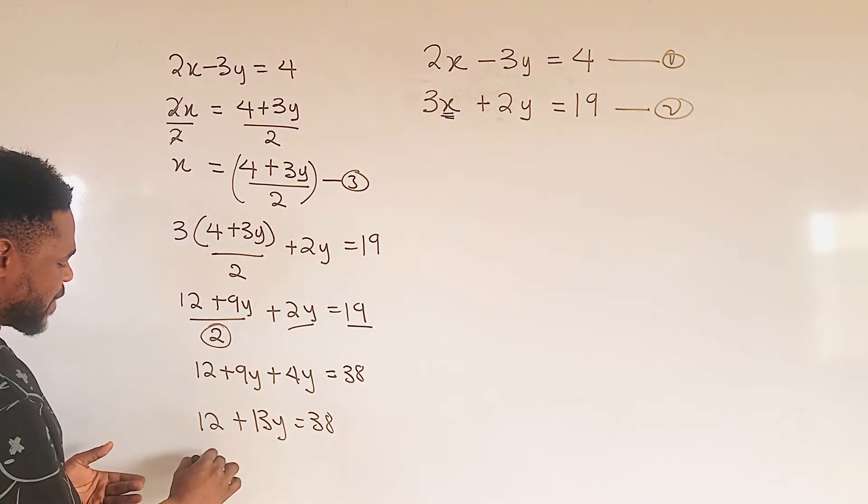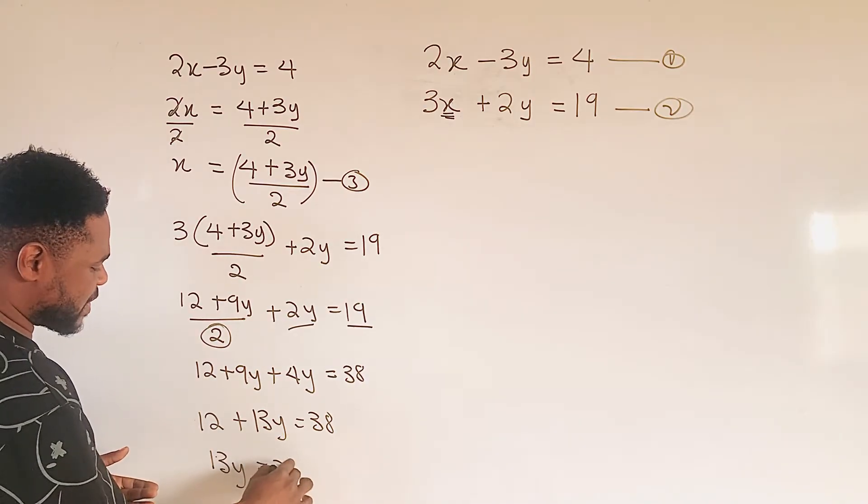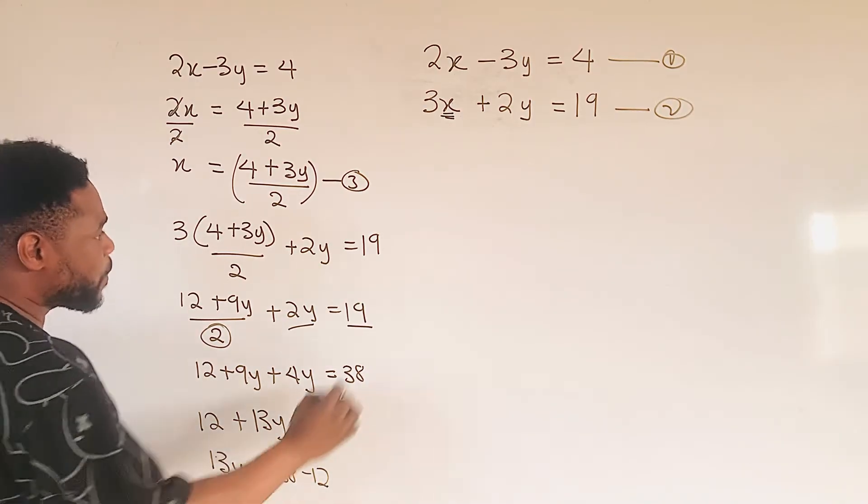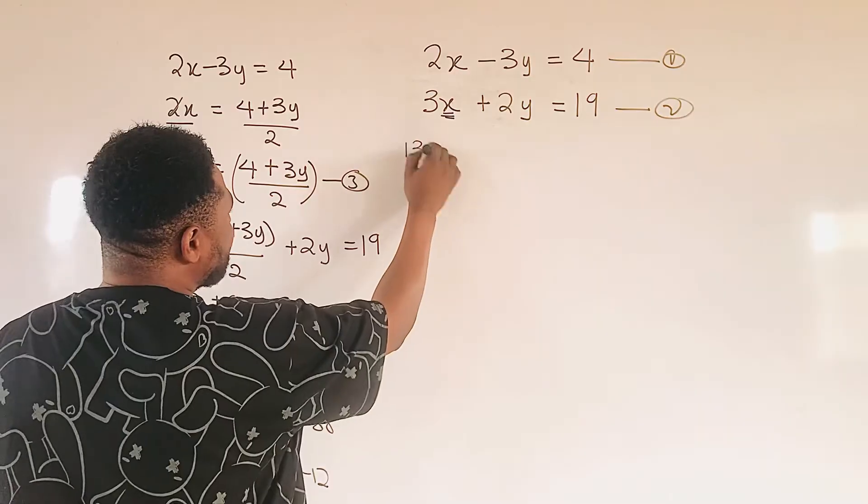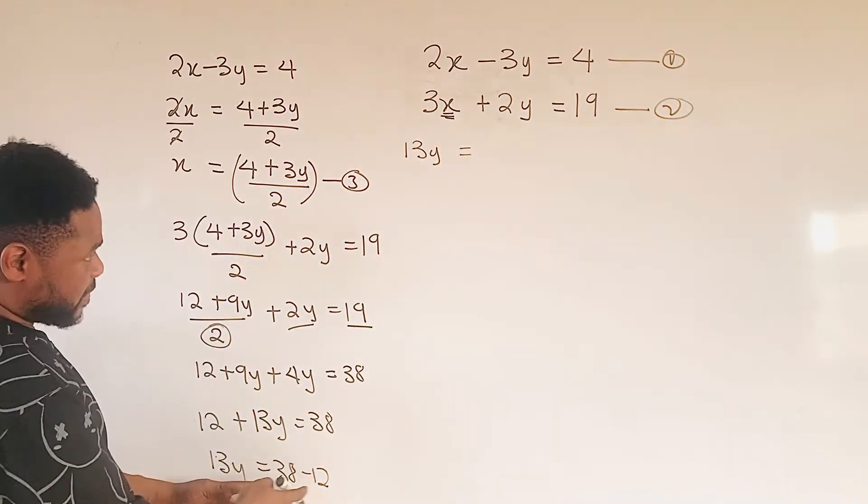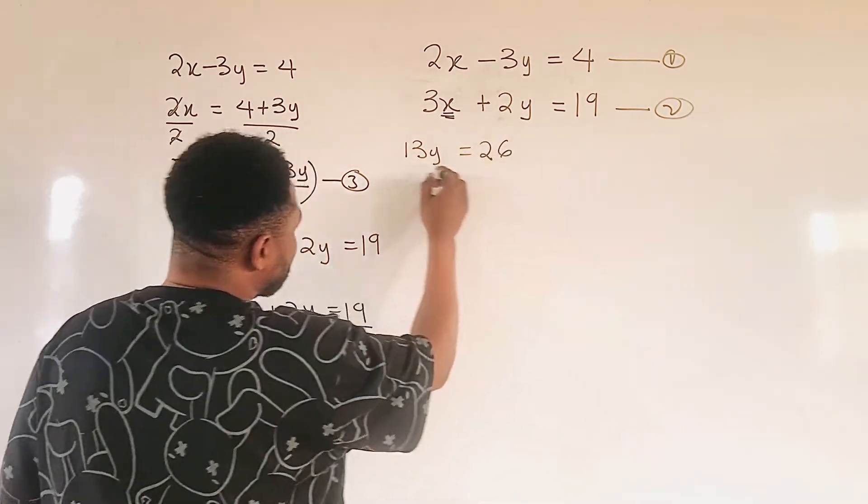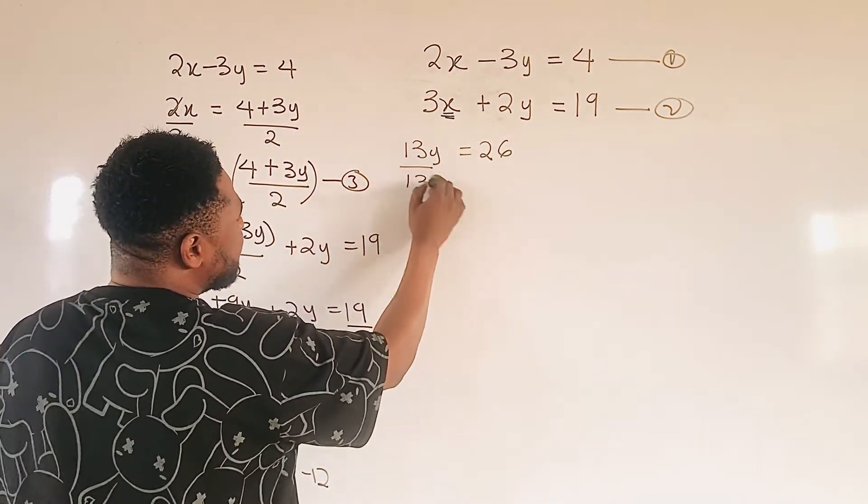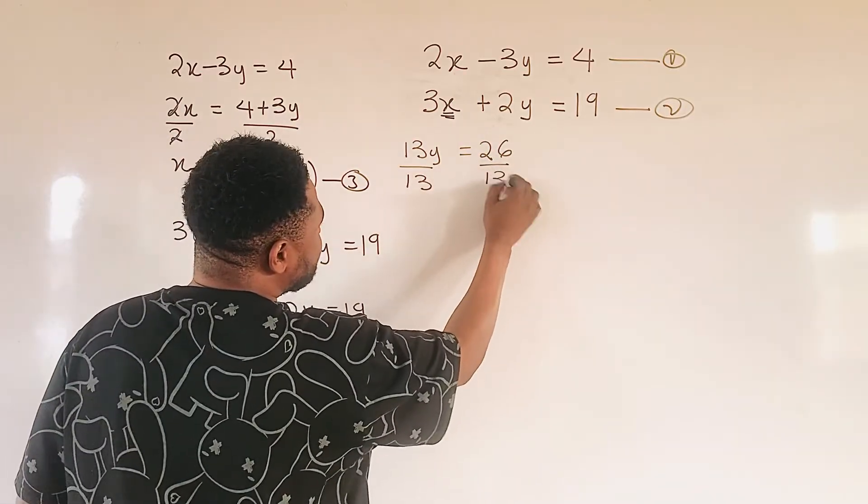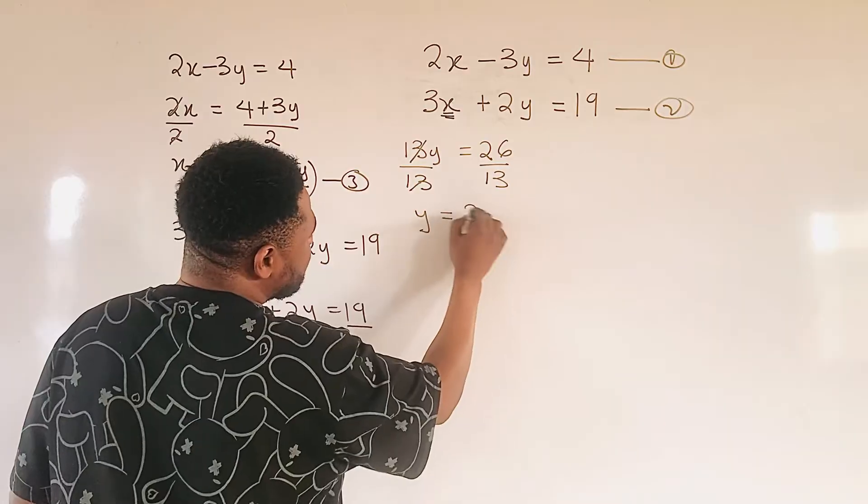At this level, we group like terms. So 13y equal to 38 minus 12. So we have our 13y, when we subtract this, it will give us 26. We divide here by 13, here by 13, and our y is going to give us 2.